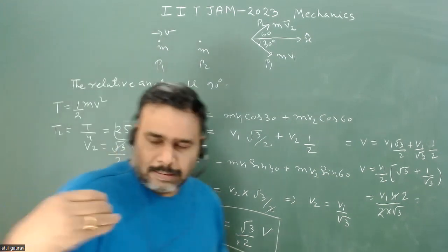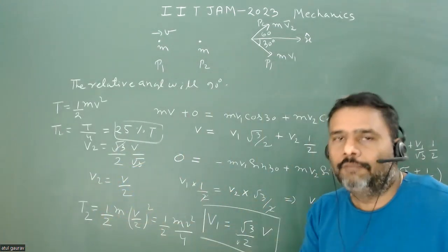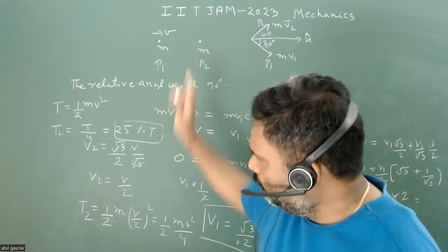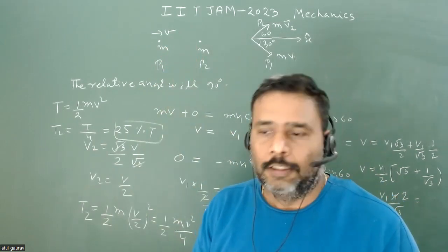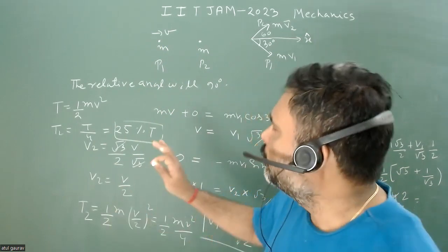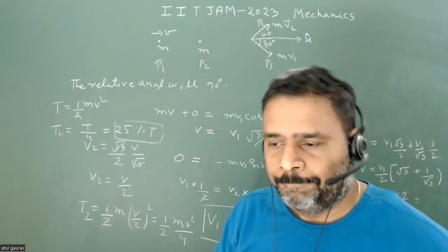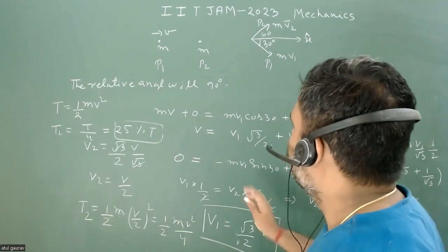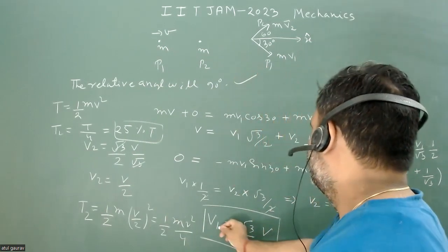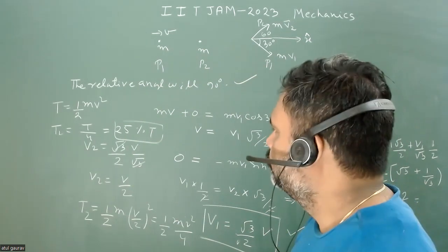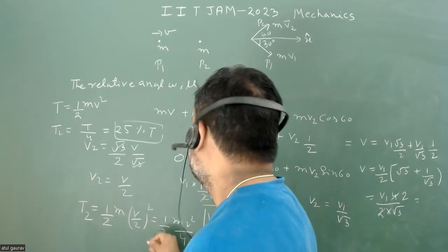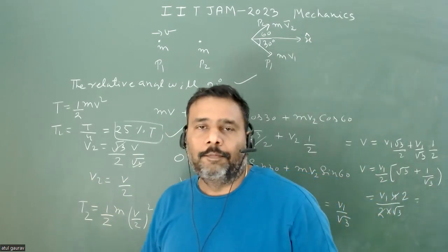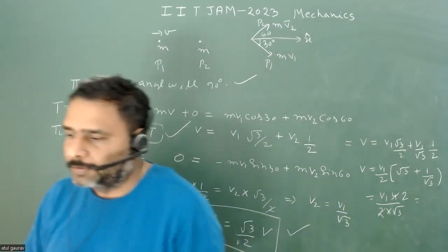We have to calculate each point in mathematical form to correctly solve the MSQ. The beauty of this problem is that P2 is initially at rest. To summarize the correct answers: the relative angle between the particles after collision is 90°, the speed of P1 is (√3/2)V, the kinetic energy of P2 is 25% of total energy, and the kinetic energy of the center of mass does not change. Thank you.